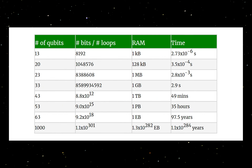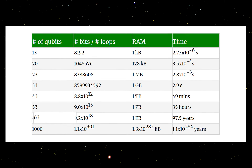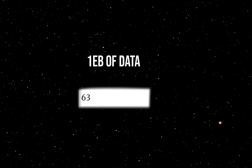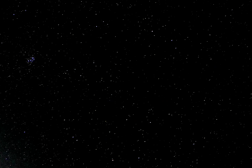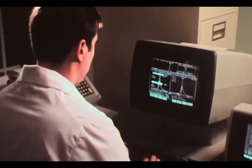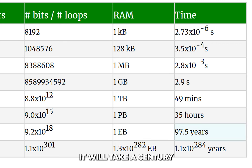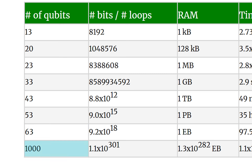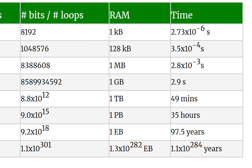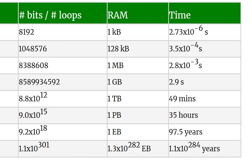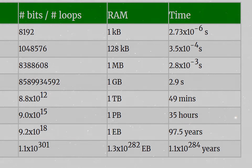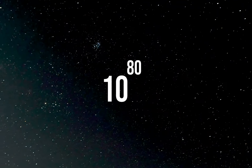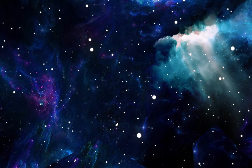Those numbers drive the point home. 63 qubits contain as many classical bits as an exabyte of data. By comparison, 63 bits are just under 8 bytes — just enough to store 8 characters. From an execution time perspective, it would take a century to simulate an operation on 63 qubits. For reference, it is believed the universe contains 10 to the power of 80 hydrogen atoms, so we would need more than 3 universes worth of hydrogen atoms to store those bits.